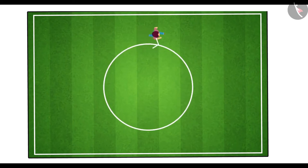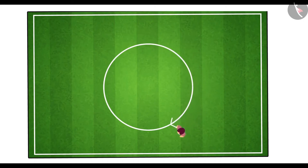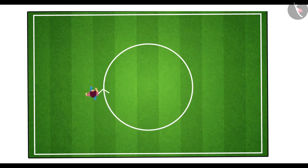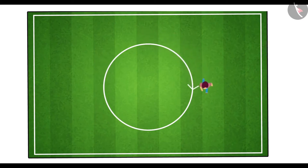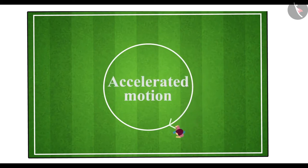Now, if the athlete moves along the circular path at a velocity of constant magnitude, then the change in her velocity is only due to the change in direction of motion. Therefore, the motion of an athlete on a circular path is an example of accelerated motion.